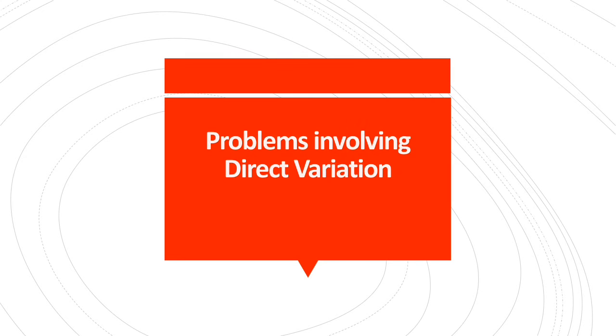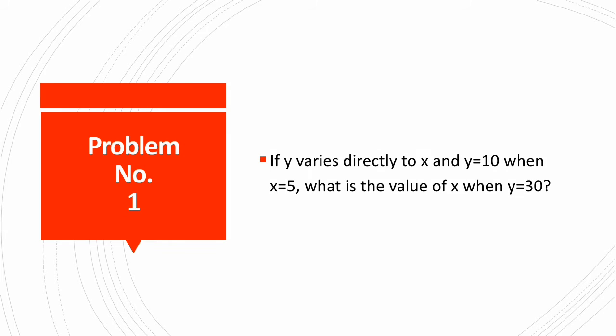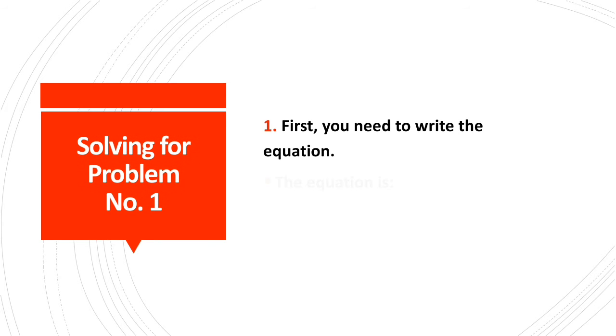Now, let's proceed to problems involving direct variation and how to solve them. Problem number one: If y varies directly to x and y equals 10 when x equals 5, what is the value of x when y equals 30? First, we need to write the equation. We need to translate it in order to find x. So, the equation is y equals kx.